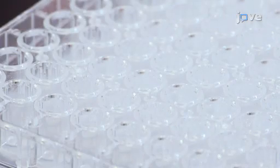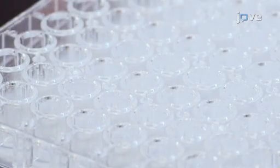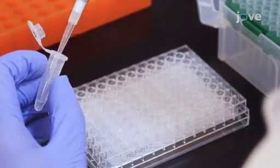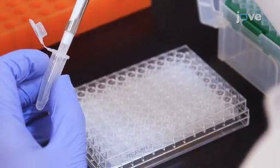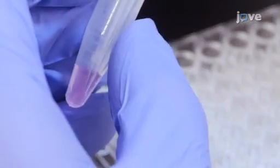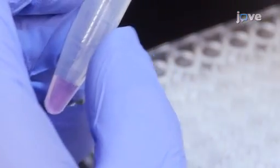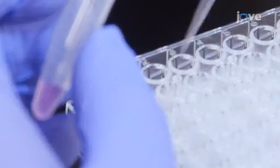For cell culture supernatant samples, add 25 microliters of assay buffer to all wells. Add 25 microliters of each standard to the standard wells. Finally, add 25 microliters of each sample to the sample wells.